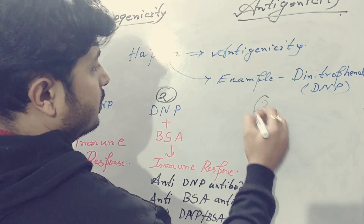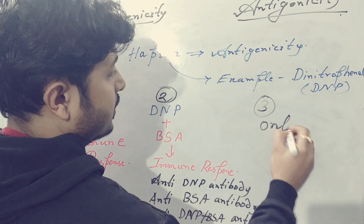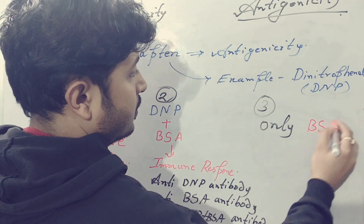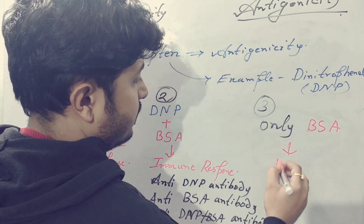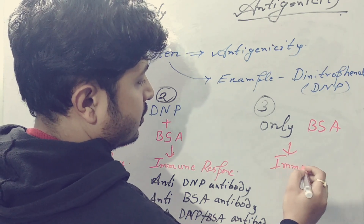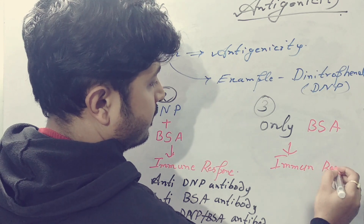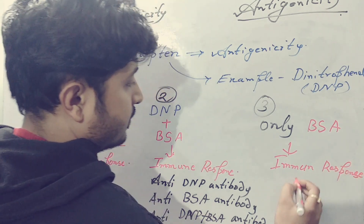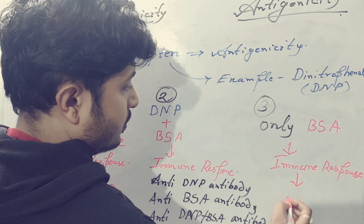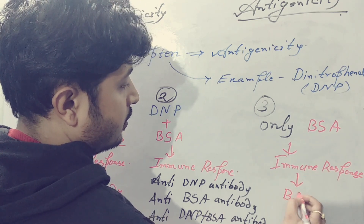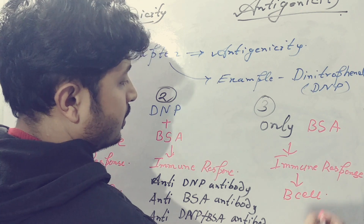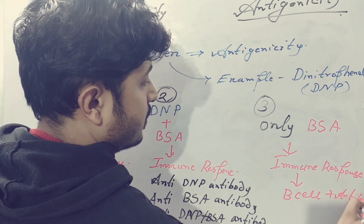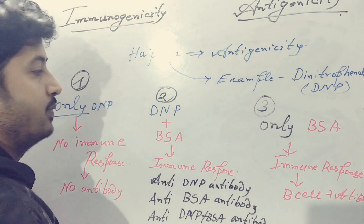And scenario three: only BSA alone. It will generate an immune response because it is an immunogen, so more BSA antibodies against that particular BSA will be produced.